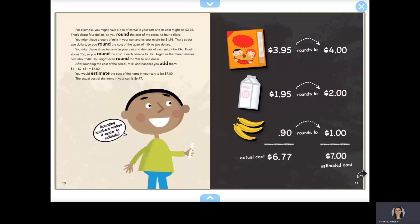For example, you might have a box of cereal in your cart and its cost might be $3.95. That's about $4.00. So you round the cost of the cereal to $4.00. You might have a quart of milk and its cost might be $1.95. That's about $2.00. So you round the cost of the milk to $2.00.